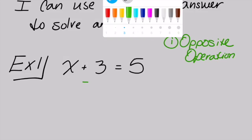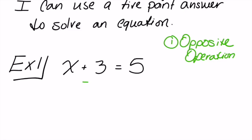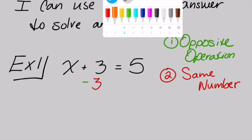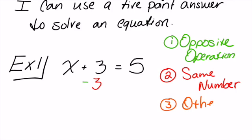The second step is to write the same number. Whatever number they are adding with, we are going to subtract with. They did plus three, so we're doing minus three. The third step is called other side. Whatever we did to one side of the equation, we have to copy on the other side. The equal sign makes a wall — if I wrote minus three on one side of the wall, I need to write minus three on the other side.